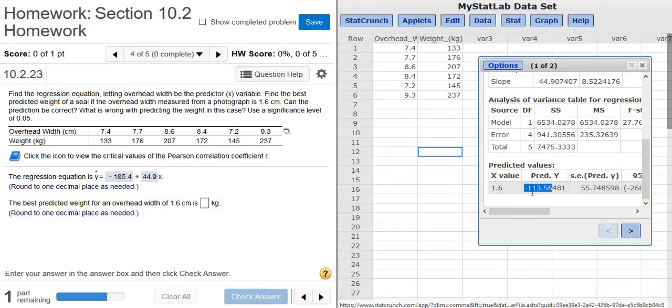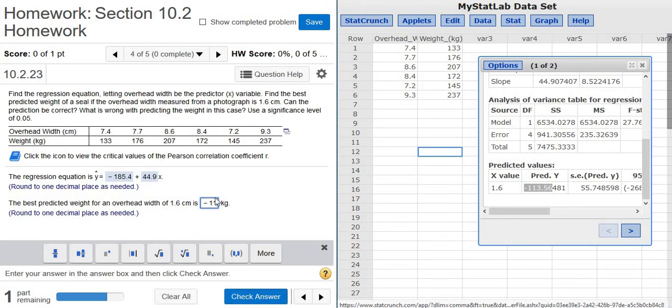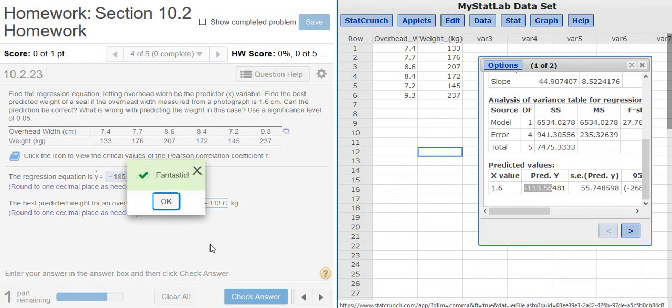It wants one decimal, negative 113.6. Fantastic.